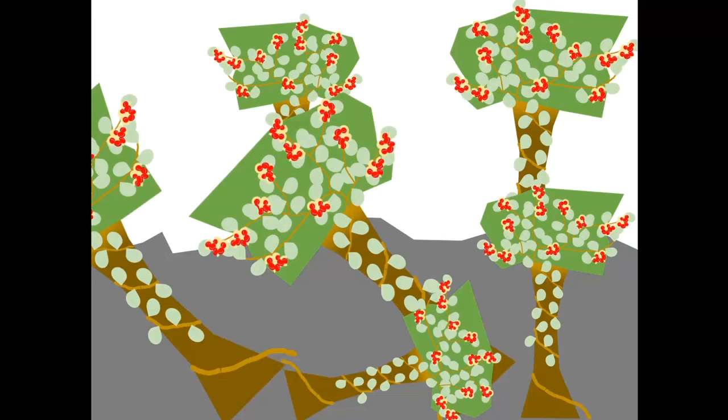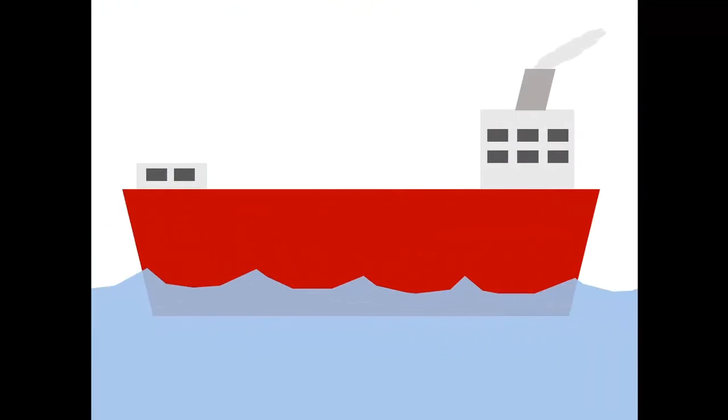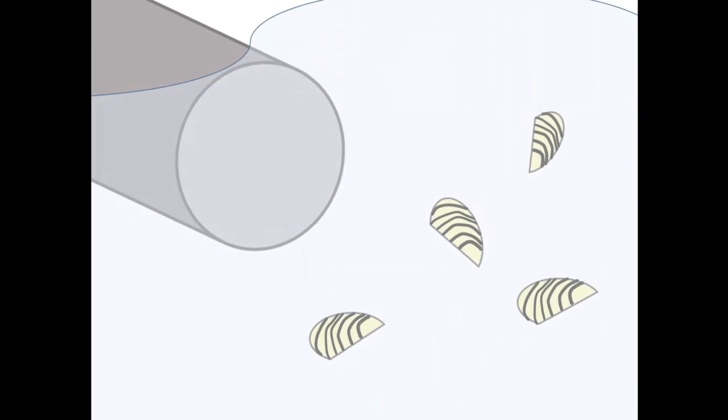Even though humans move a lot of species around the world on purpose, sometimes they don't realize that they're moving species. Zebra mussels, originally from the Black and Caspian Seas, traveled to the Great Lakes region in water inside the tanks of ocean-going ships coming from Europe. As ships released this water when they arrived at their destination, the zebra mussels were released into a new home.